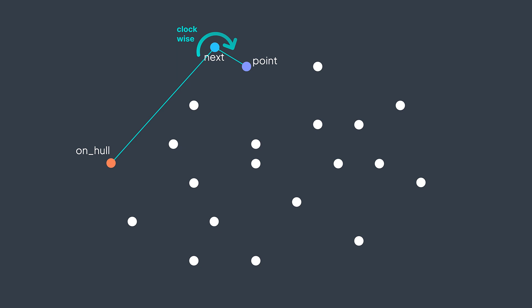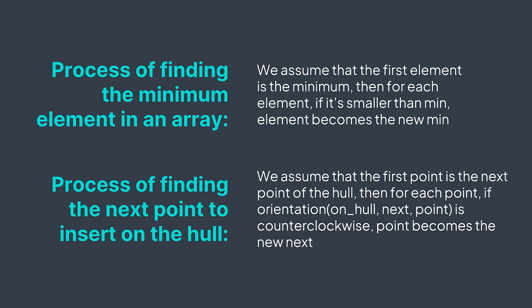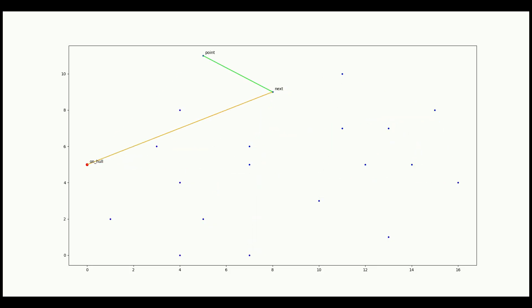This process is like finding the minimum in an array: we assume the first element is the minimum, and for each element, if it's smaller we update, otherwise we don't. In our algorithm, we assume the first point is the next point to be on the hull, then for each point, if the orientation of on-hull, next-point, and point is counterclockwise, that point becomes the new potential next point. On-hull represents the last point added to the hull — the point from which we draw the next line.